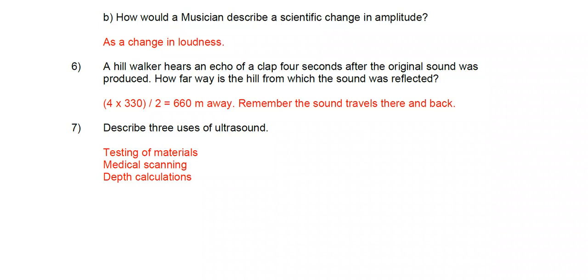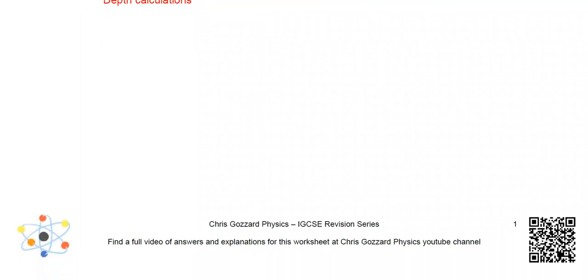And number seven: Describe three uses of ultrasound. Well, the testing of materials, so if a metal has a crack deep within it you can't see the crack, but you can reflect ultrasound off it. It can be used in medical scanning and also depth calculations for how deep water is.